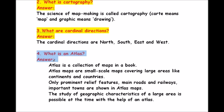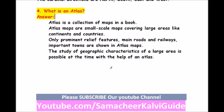Question 4: what is an atlas? Atlas is a collection of maps in a book. Atlas maps are small scale maps covering large areas like continents and countries. Only prominent relief features, main roads, railways and important towns are shown in atlas maps. The study of geographic characteristics of a large area is possible with the help of an atlas.